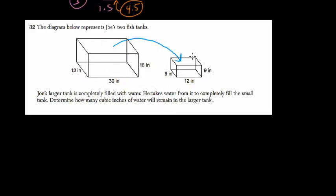That means whatever the volume is of the smaller tank will be subtracted from the larger tank. So first, we have the larger tank which has a volume of 12 by 30 by 16, and we're subtracting the 6 by 12 by 9 tank from that. That will be the volume left in the larger tank.